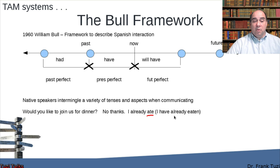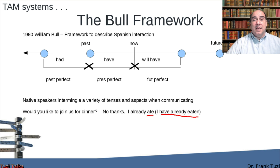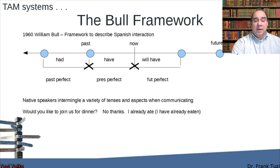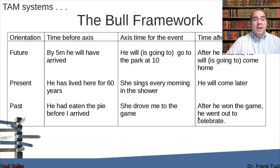You ask what the difference is between those two responses, and whether there is a particular model these components fall into. In the Bull framework, he figured out there are future, past, and present frameworks — or axes — into which the different aspects of the verb are dropped. For example, a "time before" axis: "By the time he will have arrived" — that's a time before a time.